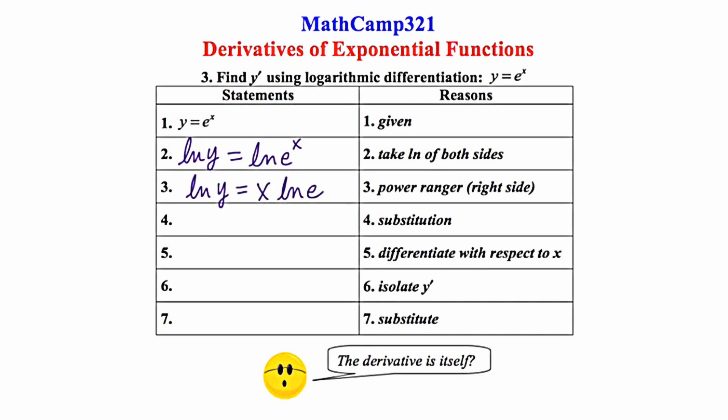Now in step 4, we're told to use the substitution property, and I'm going to substitute in for the natural log of e. What is the natural log of e? Well, as many of you probably know, the natural log of e is 1. So the right-hand side becomes x times 1, or just x.